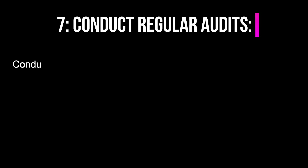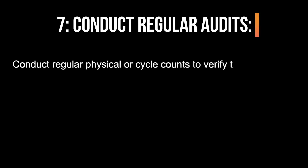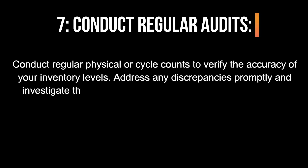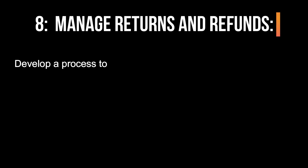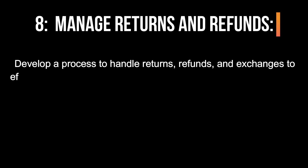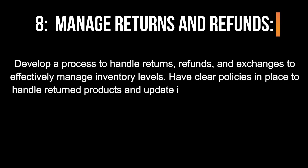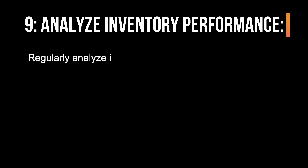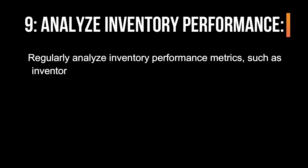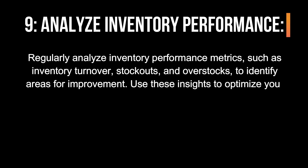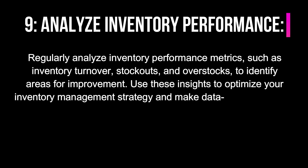7. Conduct regular audits. Conduct regular physical or cycle counts to verify the accuracy of your inventory levels. Address any discrepancies promptly and investigate the root causes to prevent inventory inaccuracies. 8. Manage returns and refunds. Develop a process to handle returns, refunds, and exchanges to effectively manage inventory levels. Have clear policies in place to handle returned products and update inventory levels accordingly. 9. Analyze inventory performance. Regularly analyze inventory performance metrics, such as inventory turnover, stockouts, and overstocks, to identify areas for improvement. Use these insights to optimize your inventory management strategy and make data-driven decisions.